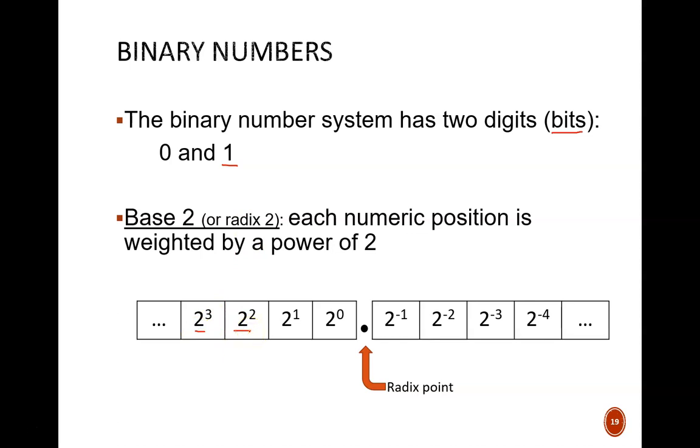But the only change in this digit weighting scheme is that base. The exponents follow the exact same pattern as we saw for decimal. The position just to the left of the radix point carries a weight of 2 raised to the 0. Each position to the left increases the exponent by 1. Each position to the right decreases the exponent by 1.